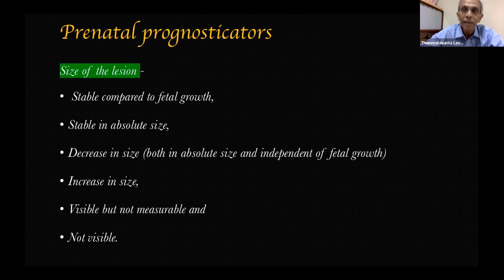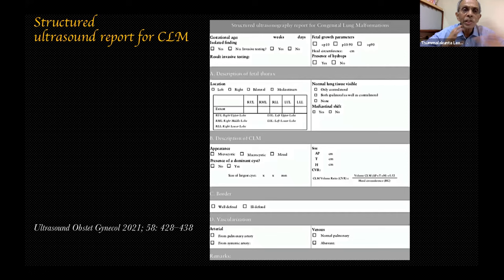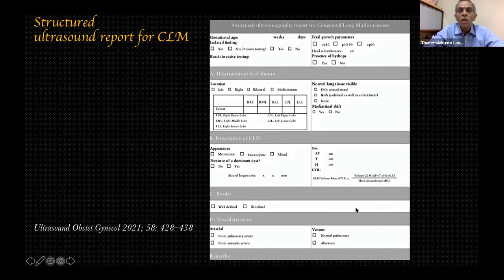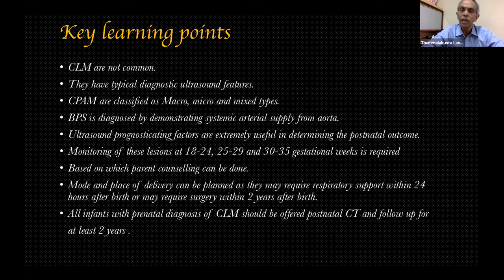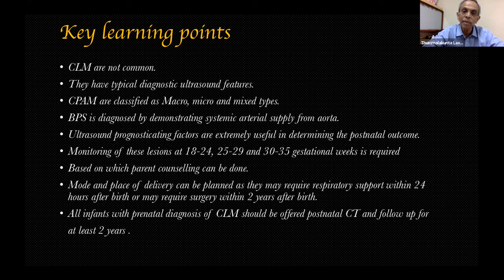The key learning points: congenital lung malformations are uncommon but have typical diagnostic ultrasound features. CPAMs are classified as macro-, micro-, and mixed types. Bronchopulmonary sequestration is diagnosed by demonstrating systemic aortic blood supply on Doppler. Ultrasound prognostic factors — particularly CVR at three time points — are extremely useful in determining postnatal outcome and monitoring these lesions.